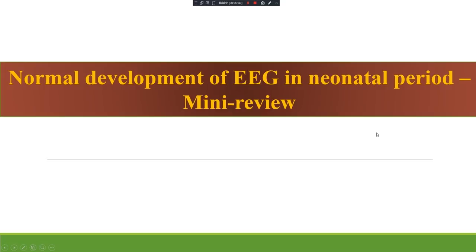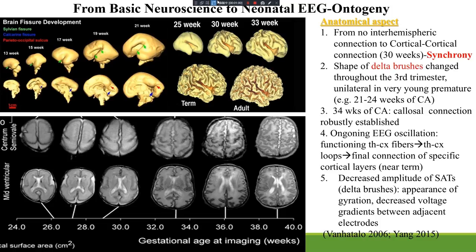The first topic is normal development of the EEG in the neonatal period — a mini review of developmental change. Anatomically, the brain develops from no inter-hemispheric connection to cortical-cortical connection at about 30 weeks of gestational age.